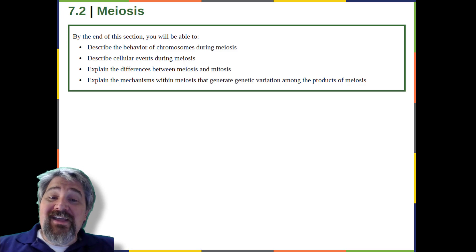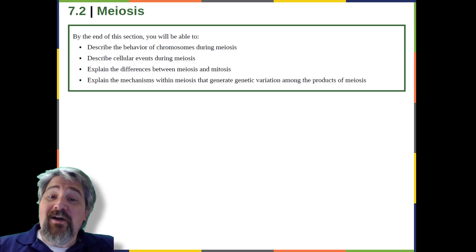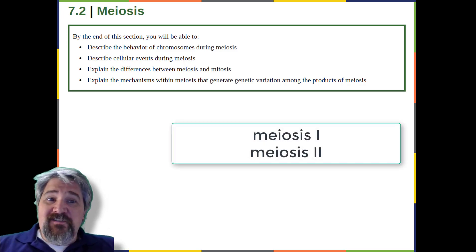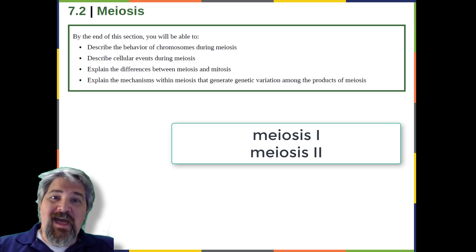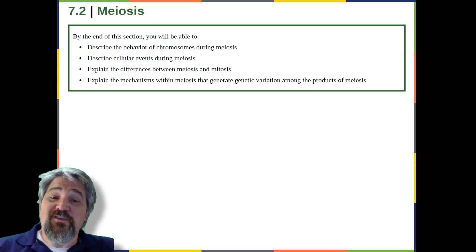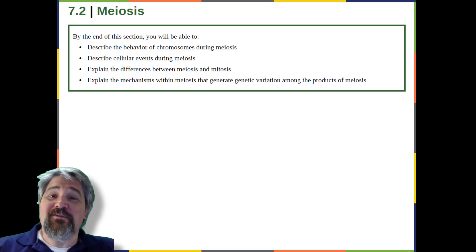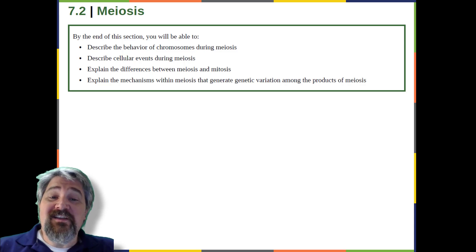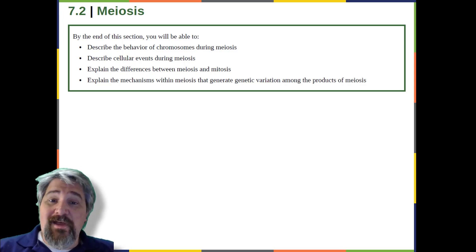Because the events during each division stage are analogous to the events of mitosis, the same stage names are assigned. However, because there are two rounds of division, the stages are designated with a Roman numeral I or II. Thus, meiosis I is the first round of meiotic division and consists of prophase I, prometaphase I, and so on. Meiosis I reduces the number of chromosome sets from two to one, and genetic information is mixed during this division to create unique recombinant chromosomes. Meiosis II, the second round, similarly includes prophase II, prometaphase II, and so on.